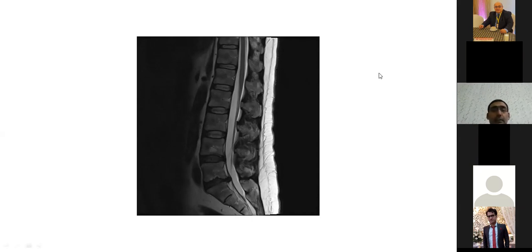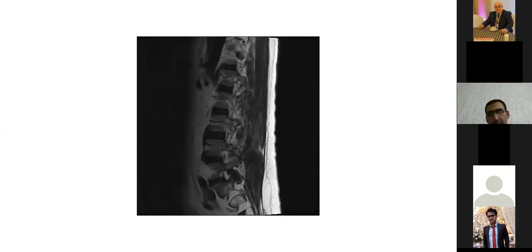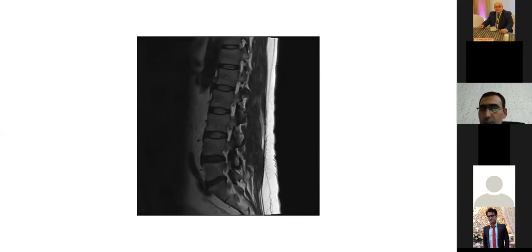Looking at the discs on T2: a bright signal in the disc indicates a normal hydrated disc because there is fluid in it. At the bottom of the disc, you can see less high signal, indicating dehydration, and the disc itself may be bulging into the canal. You can scroll through sagittal images to see different anatomical parts.